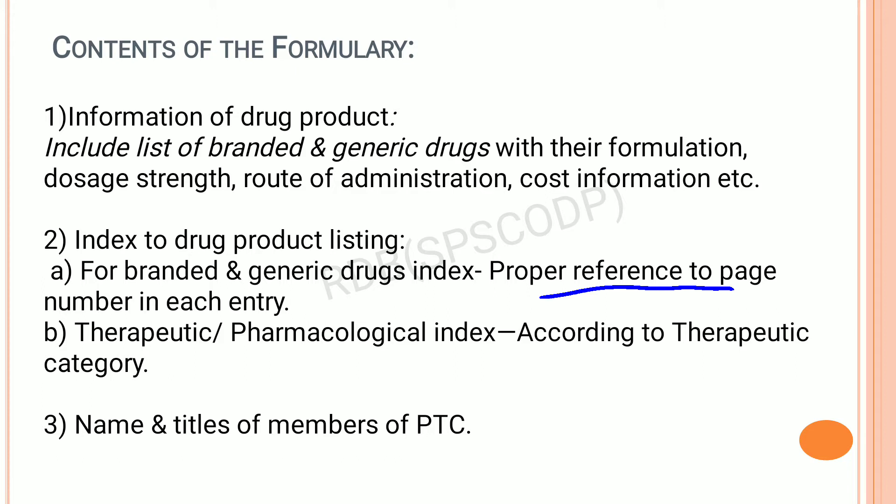The second type of index is a therapeutic or pharmacological index, where drugs are listed according to their therapeutic use or category. For example, analgesic drugs are listed separately, anti-inflammatory drugs are listed separately, and anti-tubercular drugs are listed separately. Drugs are arranged according to their category or therapeutic use.